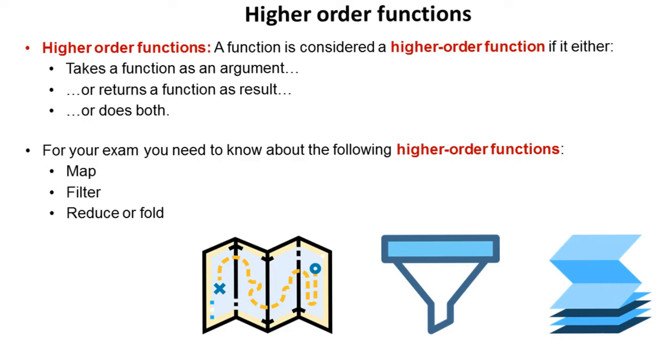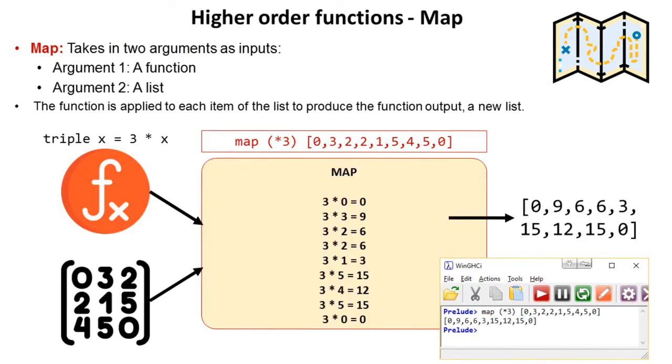Let's take a look at each in turn. So map takes in two arguments as inputs. The first argument is a function and the second is a list. The function is applied to each item of the list and what it produces as output is a new list. So we have a function here called triple which is going to take whatever you pass into it and triple it.